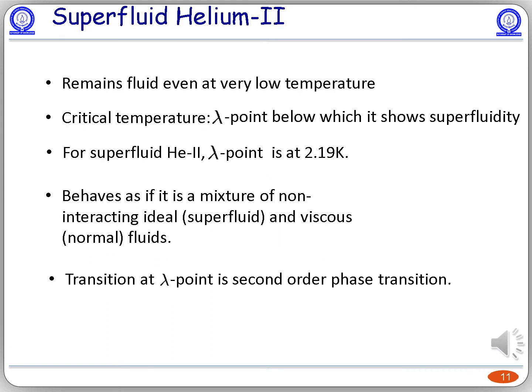I will now discuss the superfluidity of helium-4. Most fluids, when cooled to very low temperatures, tend to solidify, but this is not the case for helium-4 — it remains in its fluid state even at very low temperatures. There is a critical temperature called the lambda point, below which it shows very exciting properties, among which superfluidity is one of them. The lambda point is at 2.19 Kelvin for helium-4. Below the lambda point, the fluid behaves as if it is a mixture of two non-interacting fluids: an ideal component called the superfluid component, and a viscous component called the normal component.